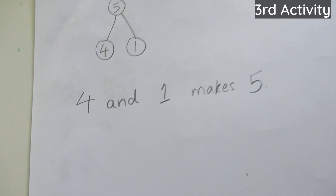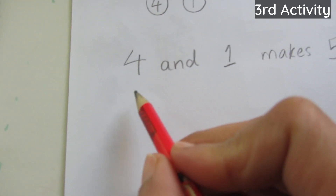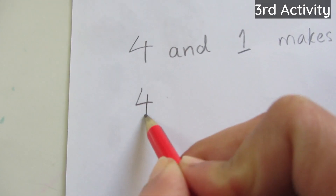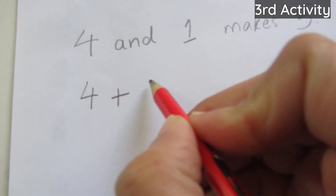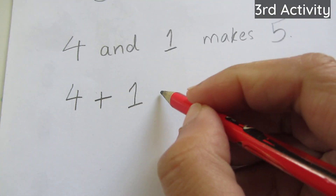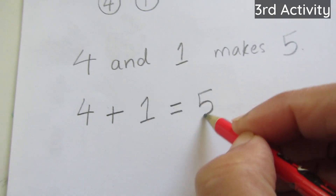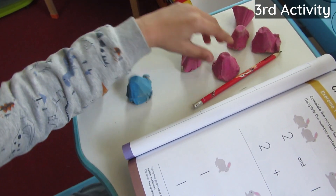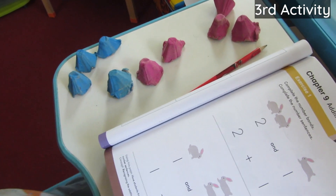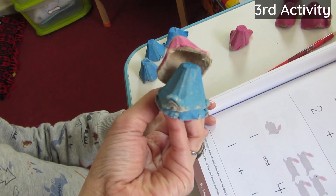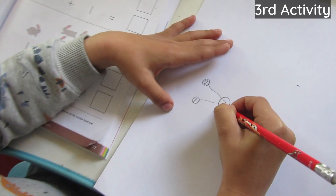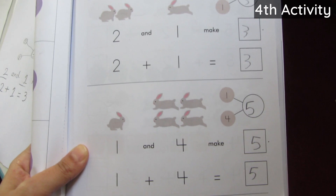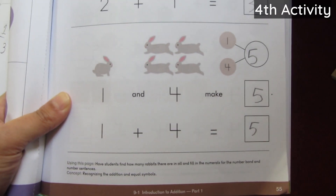Now we will simply represent this as an addition sentence. For example: 2 and 1 makes 3, which becomes '2 plus 1 equals 3.' And 1 and 4 make 5, which becomes '1 plus 4 equals 5.' We take what the child already knows from number bond language and rewrite it as an addition sentence.